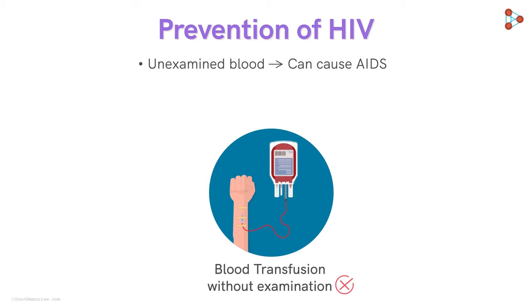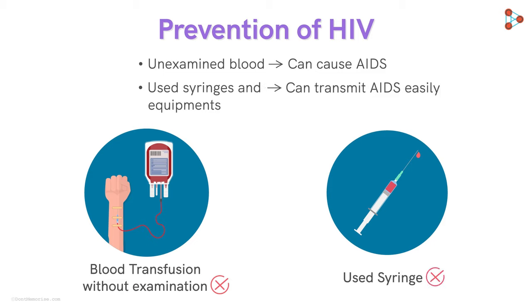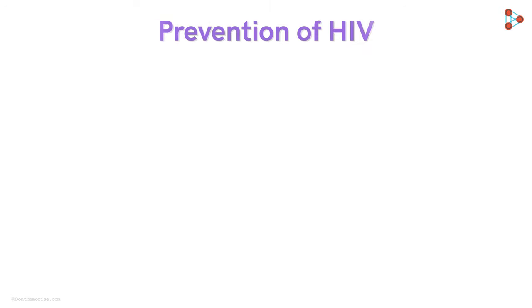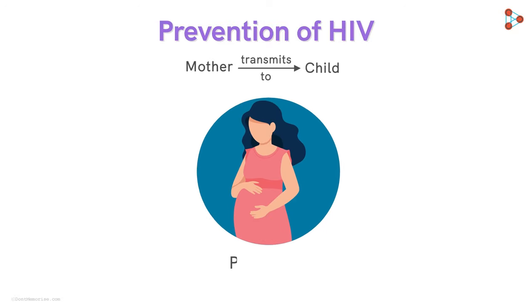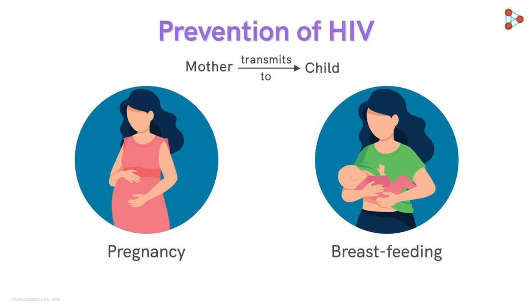The spread of HIV through blood also becomes possible with the use of syringes or equipment that has already been used. Thus, reusing syringes for medications or sharp instruments like razors for personal use should be avoided. Additionally, HIV easily passes from a mother to her child during pregnancy, delivery, or through breastfeeding, so proper medications and measures to prevent transmission of HIV to the child should be carried out.